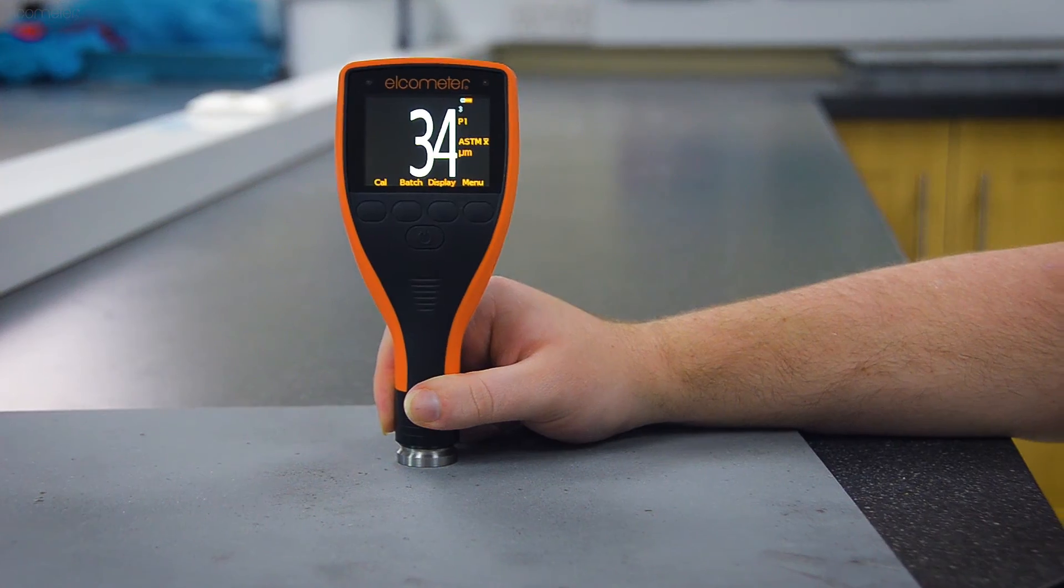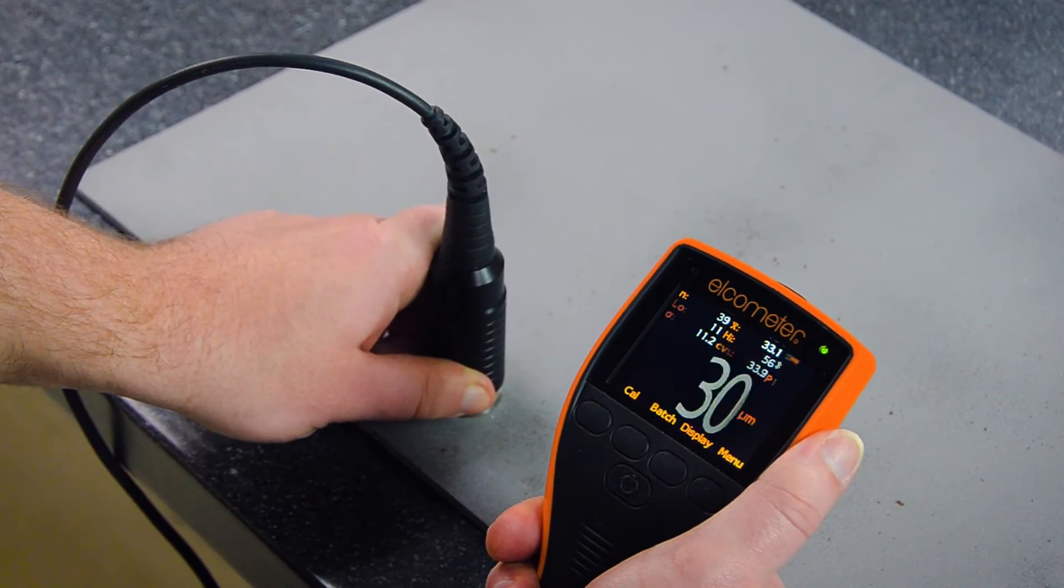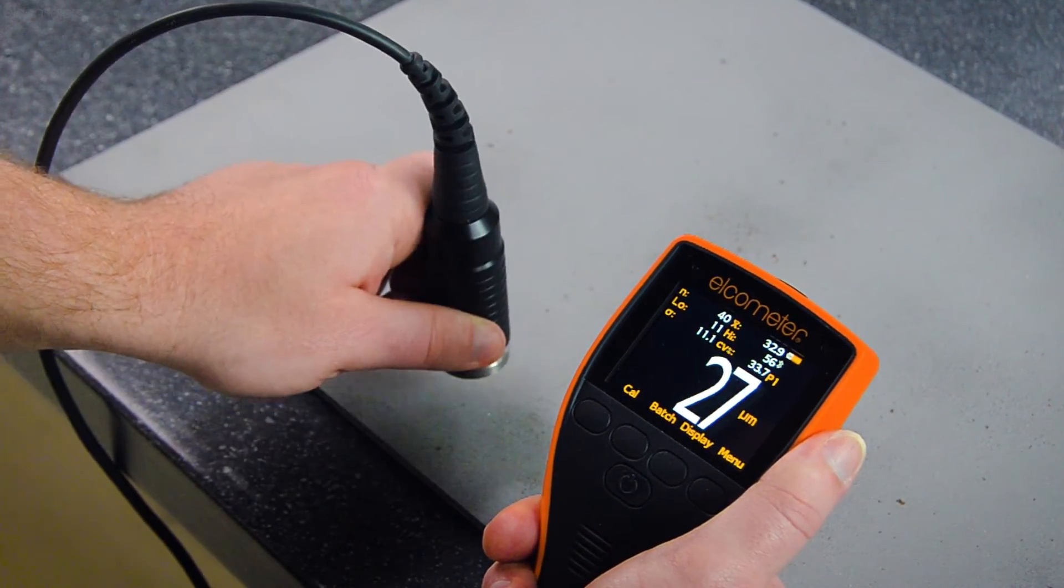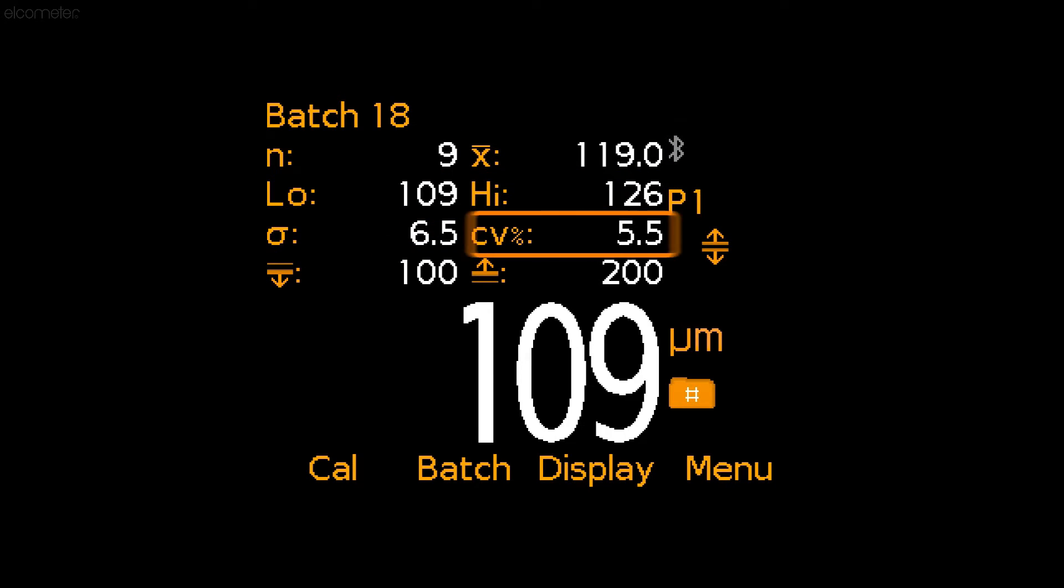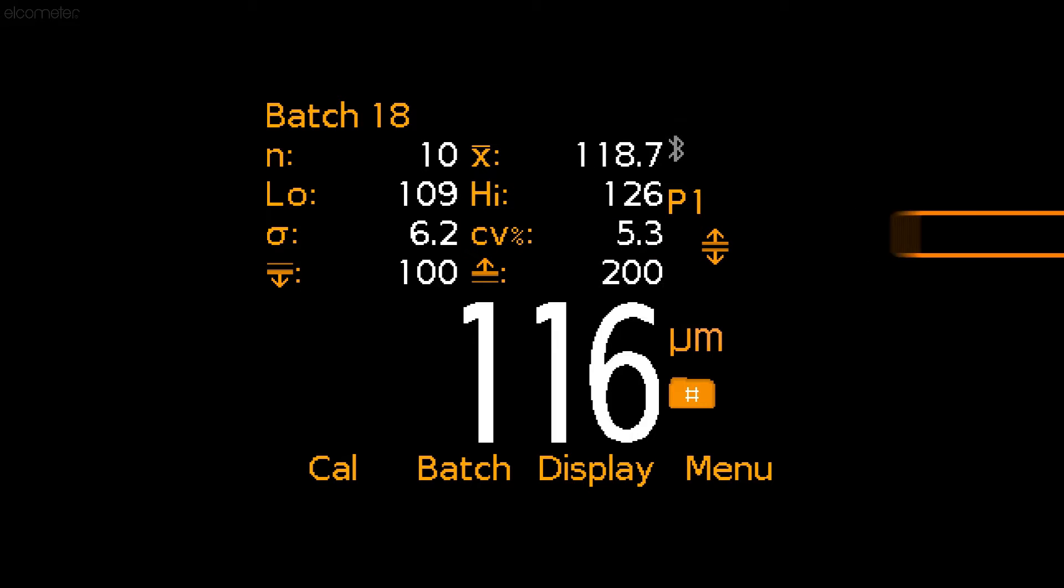The gauge can also calculate and display statistics live as you take readings, including the average, low and high values, standard deviation, and coefficient of variation, to name a few.